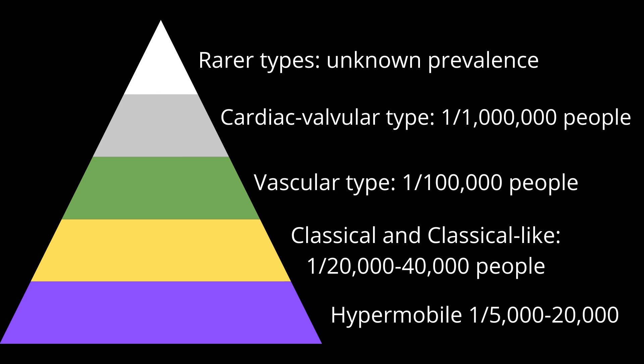Most of these types of EDS have an unknown prevalence. The most common type is the hypermobile type, which affects between 1 in 5,000 to 20,000 people. The classic and classical-like EDS affect 1 in 20,000 to 40,000 people. The vascular type affects 1 in 100,000 people and the cardiac-valvular type affects 1 in 1 million people. The remaining types are more rare than 1 in 1 million and have an unknown prevalence.